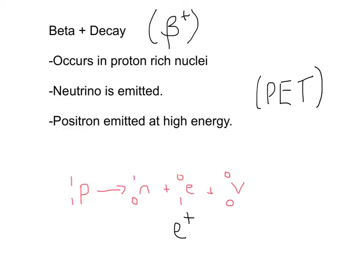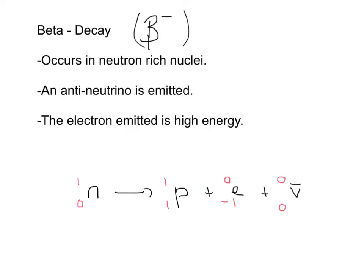Let's move on to beta minus. We've got the beta symbol with a minus this time. This occurs in nuclei with lots of neutrons - neutron-rich nuclei. An anti-neutrino is emitted this time, using the symbol with a V with a bar over the top to show it's an anti-particle. The electron emitted is high energy - not just an electron, but a high-energy electron, and that's a key thing you need to convey.